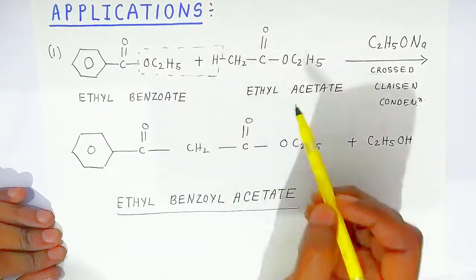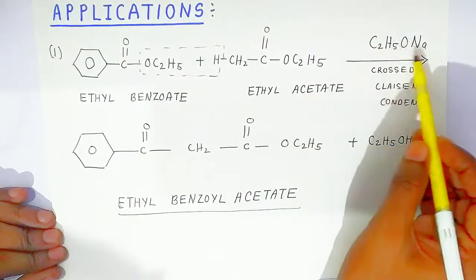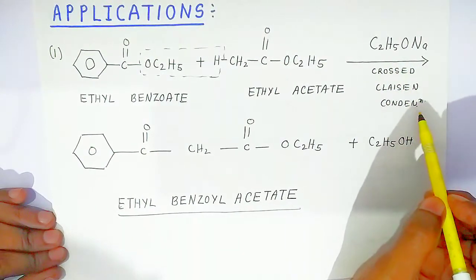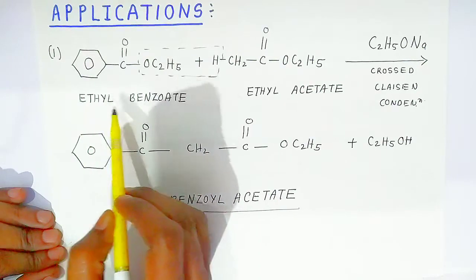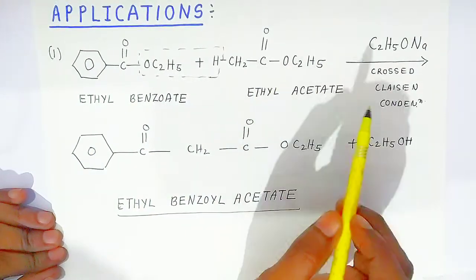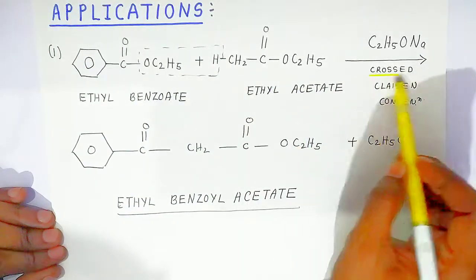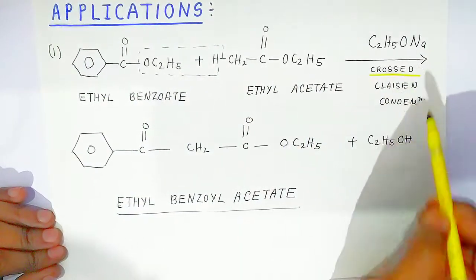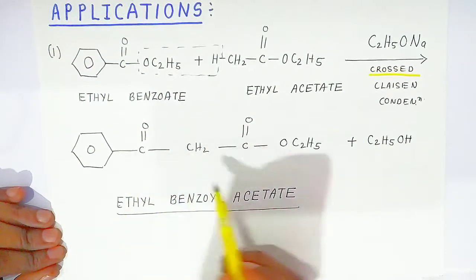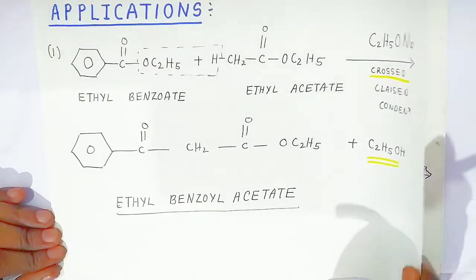Now for the applications: the first application is ethyl benzoate — an aromatic type of ester — which condenses with ethyl acetate in the presence of sodium ethoxide. This is a crossed Claisen condensation because we have an aromatic ester and an aliphatic ester. The product obtained is ethyl benzoyl acetate, with elimination of alcohol.